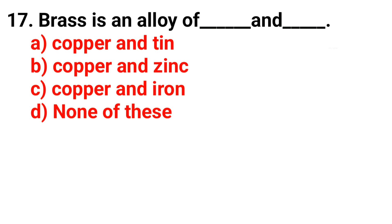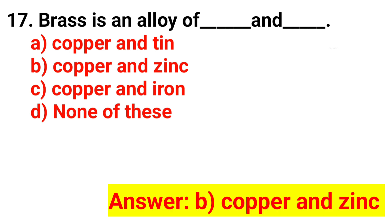Question 17. Brass is an alloy of blank and blank? The answer is Option B: Copper and zinc.